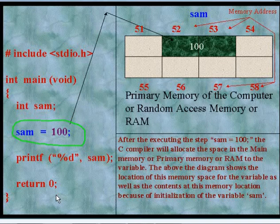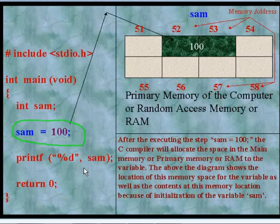Since sam is an integer type of variable and the length of an integer type of variable is two bytes, the two bytes memory space will be allocated for variable sam. Now see the diagram.